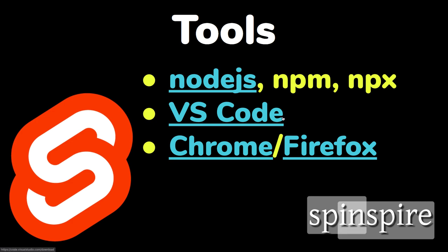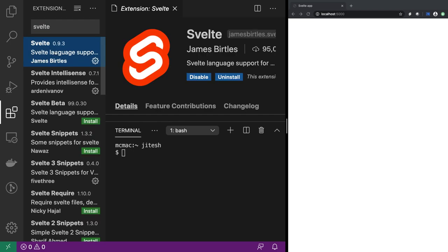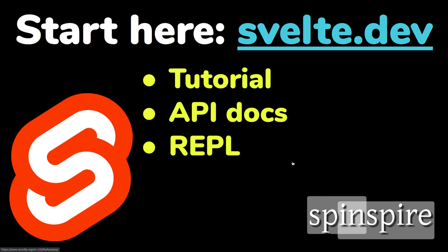For a code editor, you'll need VS Code. You can use other editors, but you'd be far less productive. VS Code has lots of extensions — I highly recommend you also install the Svelte extension for it. For development and testing, use Chrome or Firefox; both have excellent built-in developer tools. If you've never used Chrome or Firefox, Svelte is probably not the first thing you should be looking at.